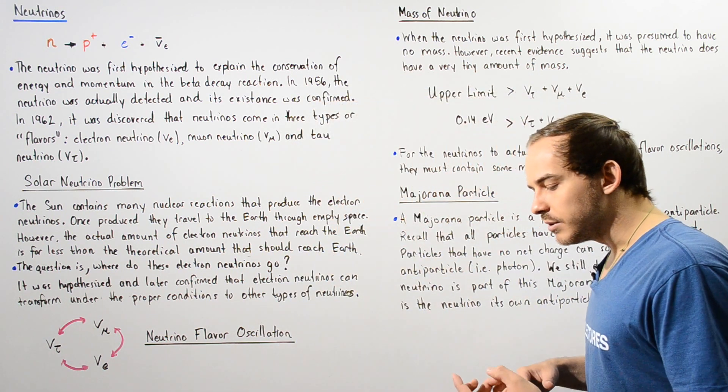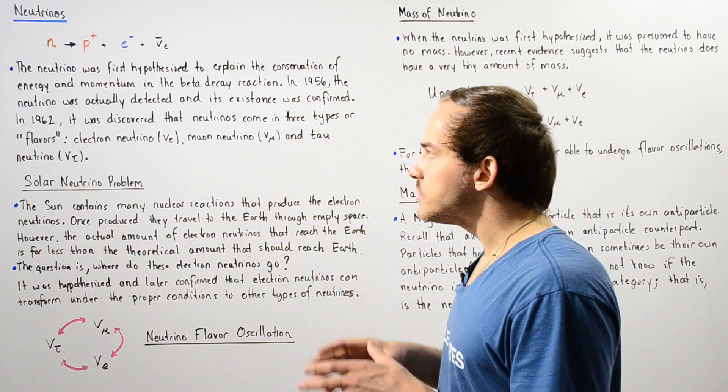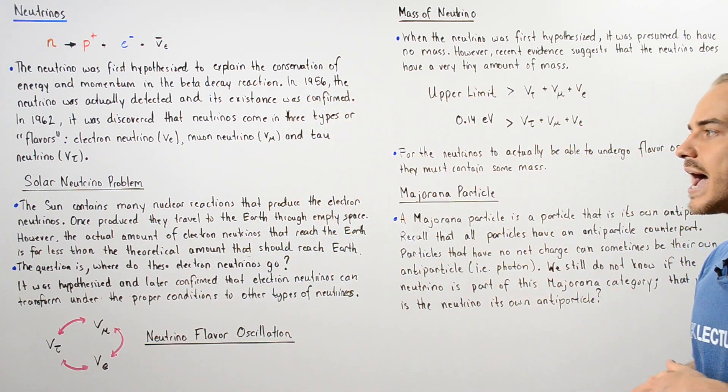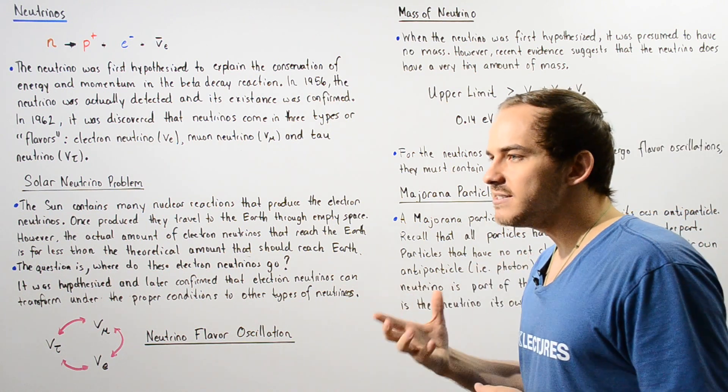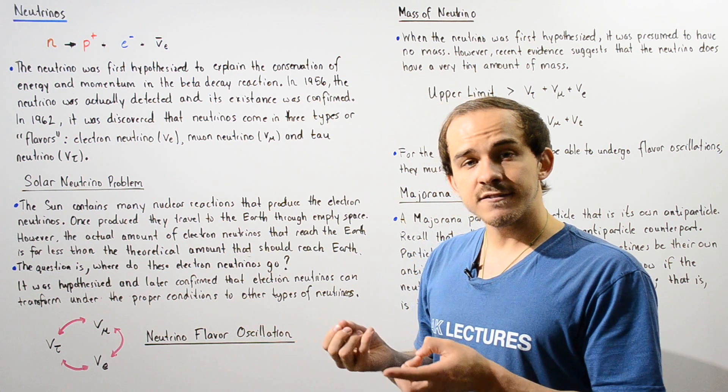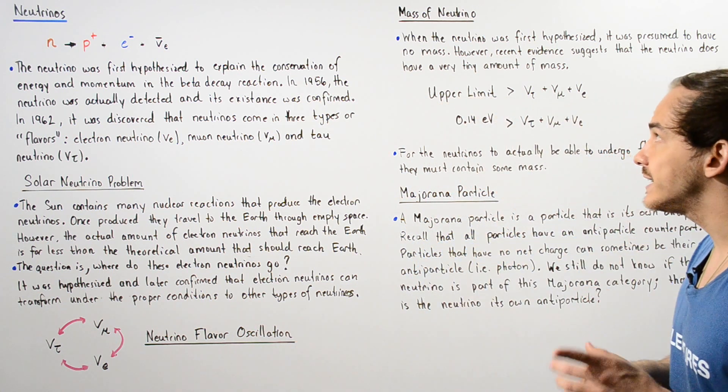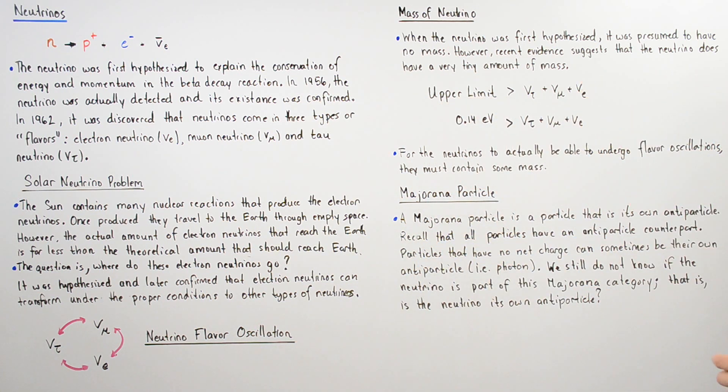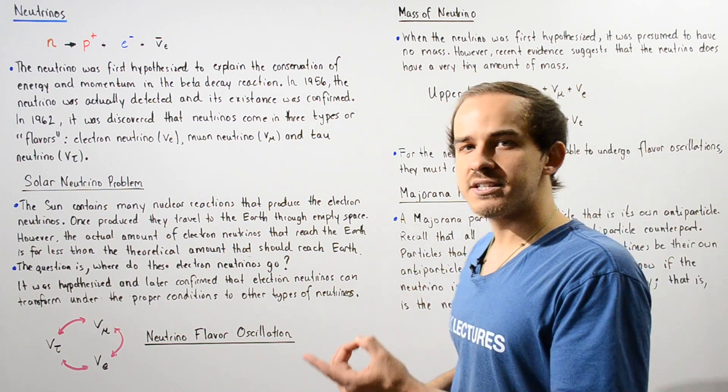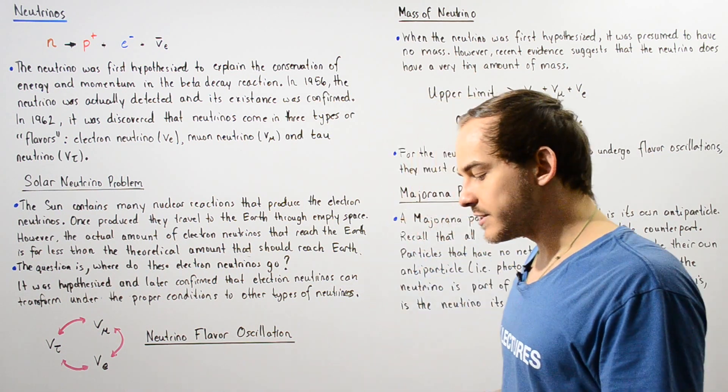Now the next problem about our neutrino, which still has not been resolved, is the issue with the mass. So what exactly is the mass of our neutrino? We know the neutrino is very small. In fact, initially, it was hypothesized that our mass of the neutrino was zero. However, today, we believe that the upper limit of the sum of all these three types of neutrinos is given by 0.14 electron volts.